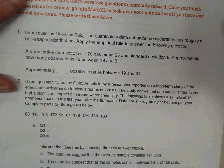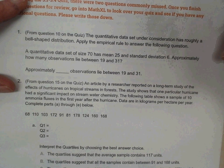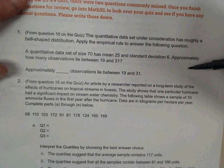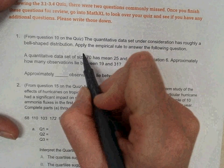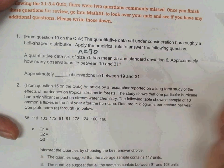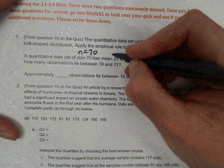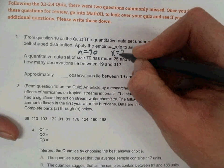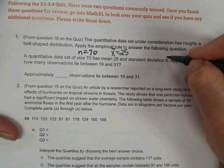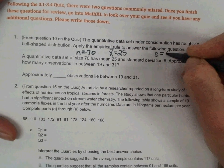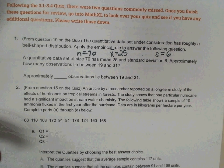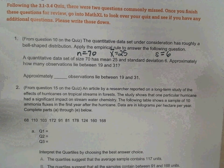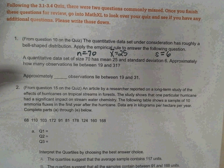Standard deviation 6. Approximately how many observations lie between 19 and 31? So we have n equals 70. Go ahead and label these. Mean x bar equals 25. Standard deviation s equals 6. We want to keep using these abbreviations so that they stick.